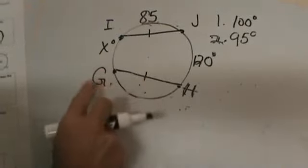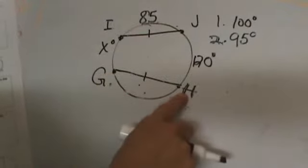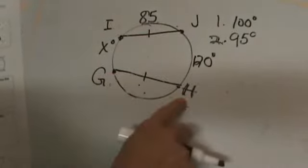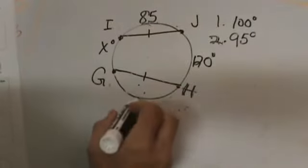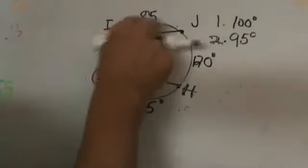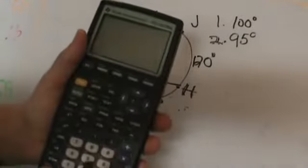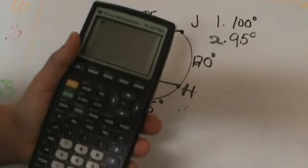Let's call it X for now. But we're missing two parts. But what do we know about GH? GH is going to be the same as IJ. So I can come over here and mark that as 85.